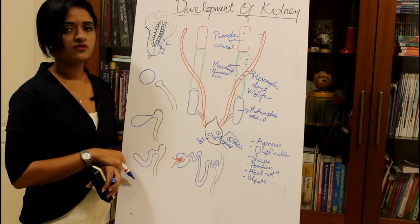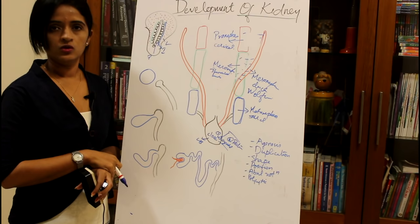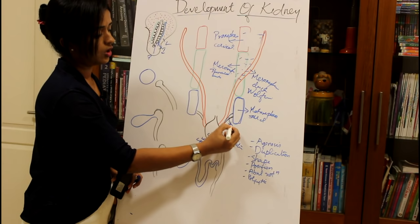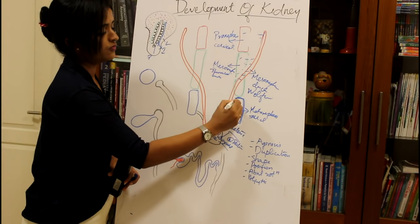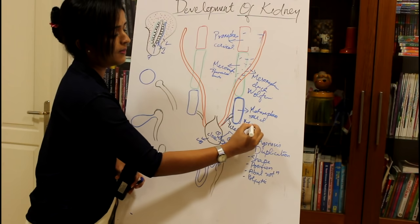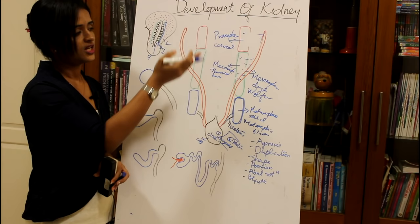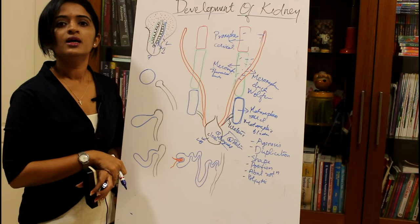Towards the end stages of kidney development, it is the metanephros which develops to give rise to the human kidney proper. A bud arises from the mesonephric duct called the ureteric bud. The metanephros from which the human kidney proper develops is called the metanephric blastema. Pronephros and mesonephros do not contribute to the adult kidney; only the ureteric bud and metanephric blastema do.